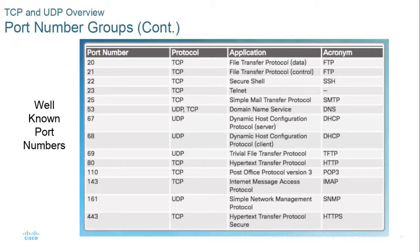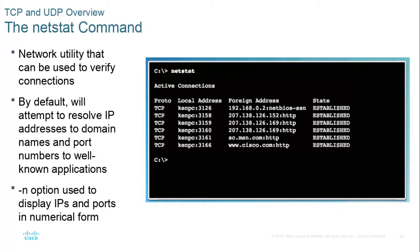Here are some well-known port numbers for application protocols: FTP is an old file transfer protocol using two ports for data and command/control. Telnet is port 23, SMTP for sending email is port 25, and web traffic is port 80. The netstat command run at the command prompt shows all current connections. Using the -n option displays port numbers in numerical form instead of DNS lookup values.